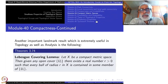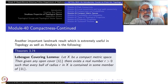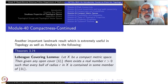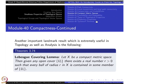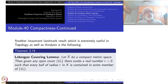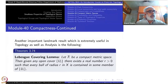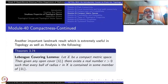Start with a compact metric space. Given any open cover U_i, there exists a real number R > 0 such that every ball of radius R in the space is contained in one of the members of U_i. There are several applications of this, even at the beginning level while doing Riemann integration — especially for the closed interval [0,1]. Directly or indirectly, you must have used this theorem.